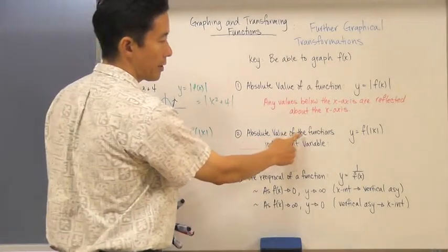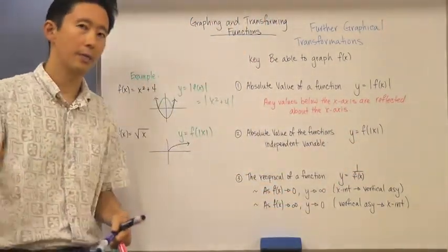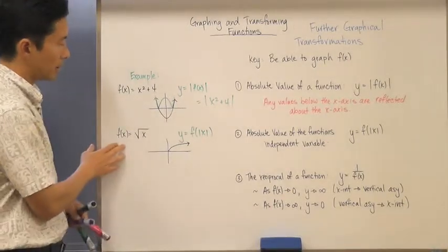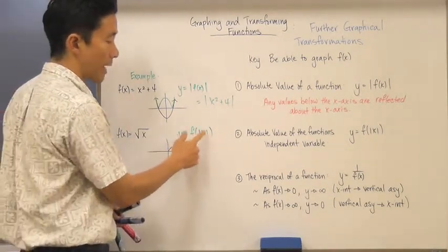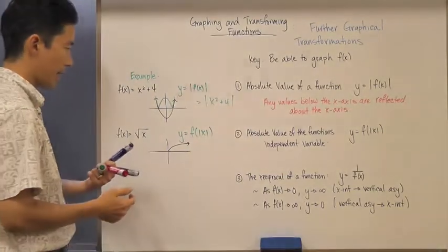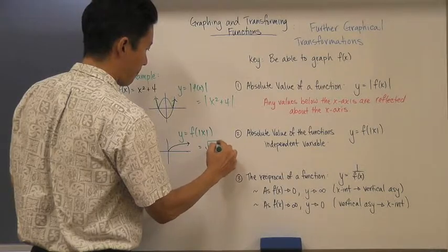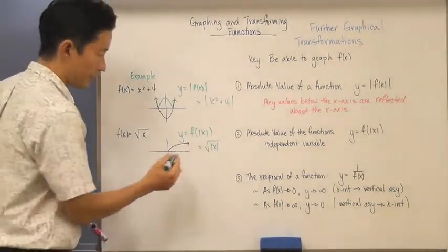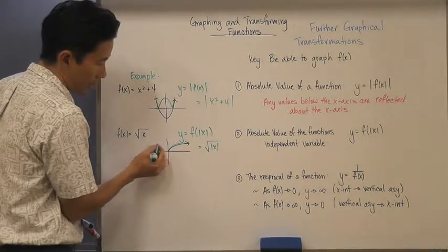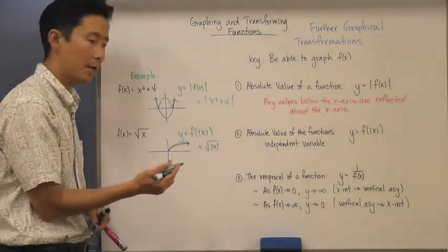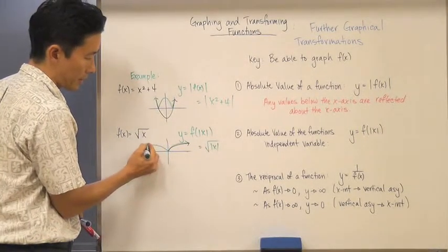Now let's look at what happens when you take the absolute value of the function's independent variable. You have y is equal to f of the absolute value of x. Notice we're now affecting the x values. Let's say f of x is equal to the square root of x. If we draw y equals f of the absolute value of x, the positive x part stays the same. But all those negative x values, which didn't exist before because you can't take the square root of a negative, are now positive because of the absolute value sign.